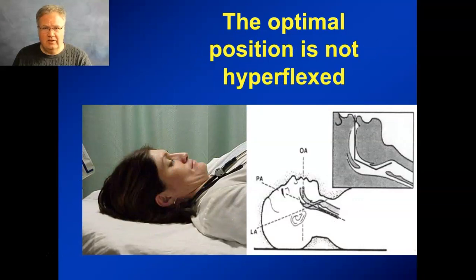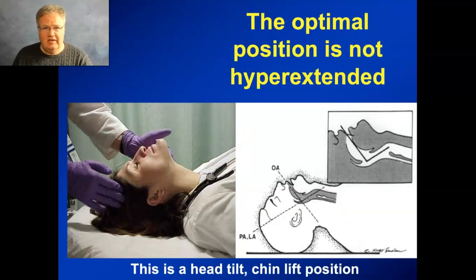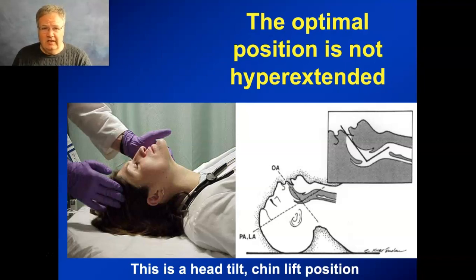Hyperflexed certainly doesn't help because now we have a hyper-acute angle, and the tools we have make it even harder to manage those airways. Hyperextended is also not perfect — you're still getting a 90-degree angle that, even though manageable, is not ideally lining up the axes. Head tilt chin lift is in many ways the optimal position for non-invasive bag valve mask ventilation, and a common error is bag valve masking a patient, then failing to reposition the head before intubating.